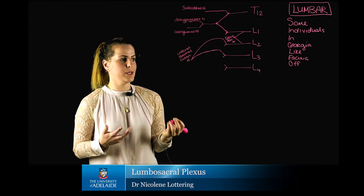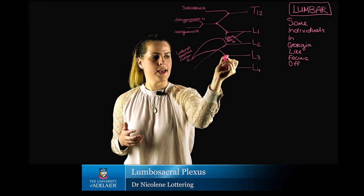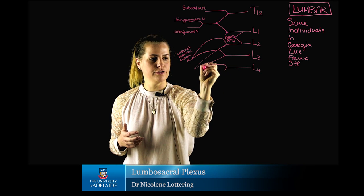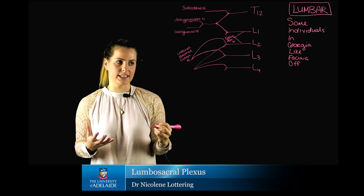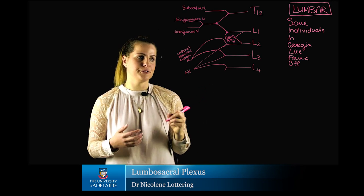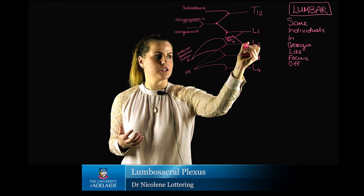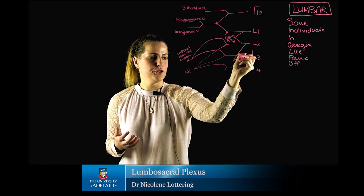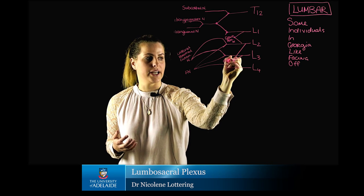If we keep going, the rest of the rami from L2 and L3 as well as the ventral rami from L4 are going to form the longest or biggest nerve associated with the lumbar plexus, which is our femoral nerve. Lastly, the 'off' in our mnemonic corresponds to origins from L2, L3, and L4, which is going to be our obturator nerve.